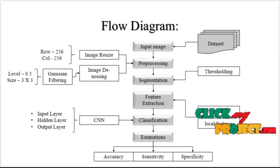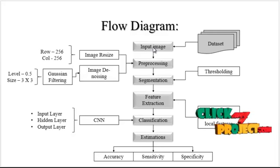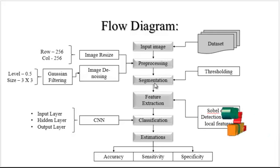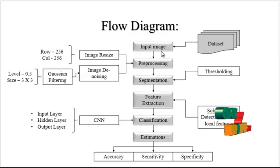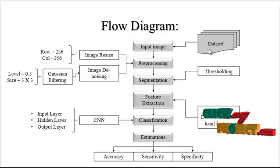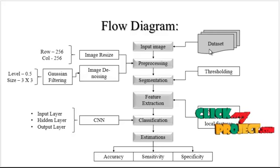Now we are going to discuss the flow diagram of the process. This is the overall working flow. The project steps are: input image, pre-processing, segmentation, feature extraction, classification, and finally performance estimation. The input image will be taken from the dataset, which contains several bone X-ray images having both fractures as well as non-fractures.